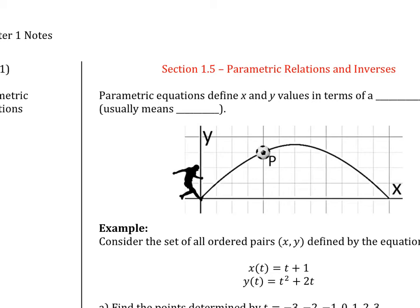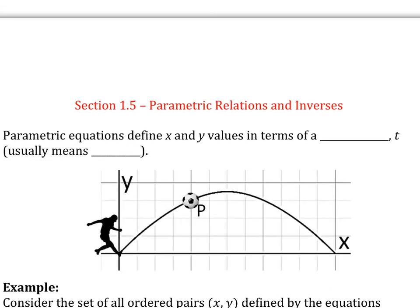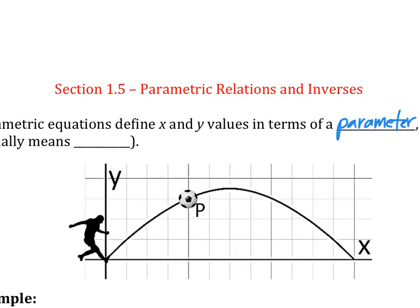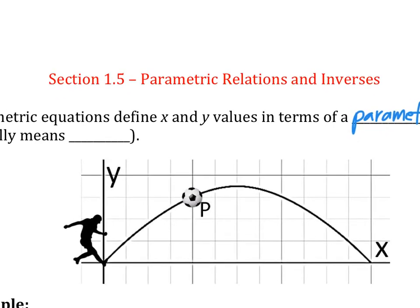We're on section 1.5 today, talking about parametric equations. Parametric comes from the word parameter. A parameter is kind of like a knob that you turn - like on a machine, it's one of the knobs you turn. It's a parameter you're changing. A parametric equation will define x and y values in terms of a parameter.